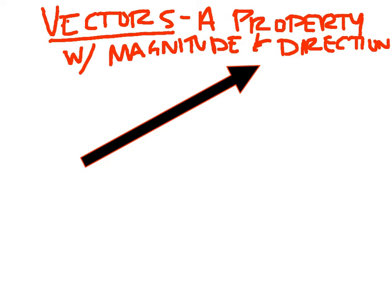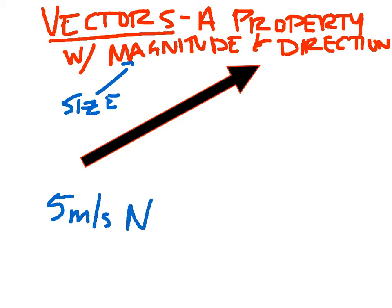A vector is a property with magnitude and direction. Magnitude means size, and direction is obviously direction. When we talk about vectors, I would say something like he's traveling at 5 meters per second north. The 5 meters per second part is the size — it's the magnitude, it's the speed. North is the direction. Those things together make it a vector.